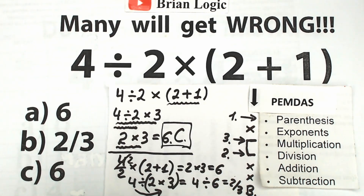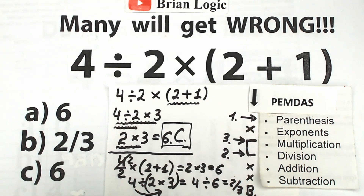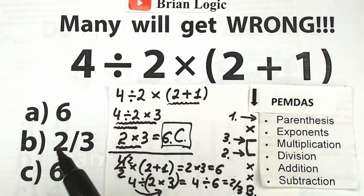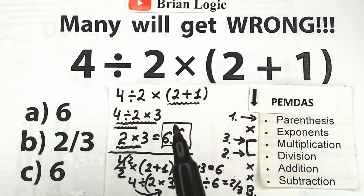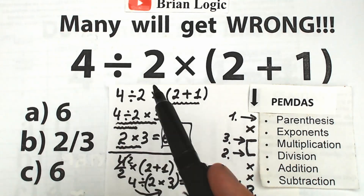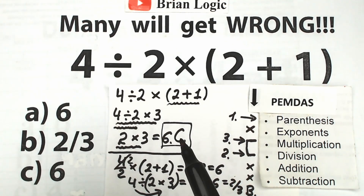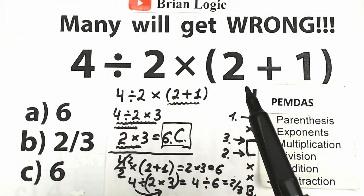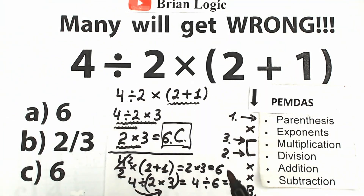You can easily check this solution with a scientific or graphing calculator. Don't use a regular calculator, because those sometimes process problems as you type — for example, dividing instantly when you enter 4 divided by 2. Try a graphing calculator where you can enter the whole problem, and it's smart enough to handle the order of operations: parentheses first, then division, then multiplication — and it will give you the correct answer.